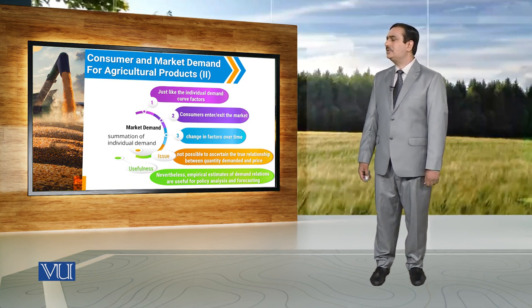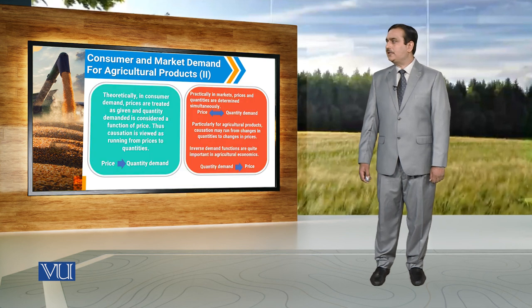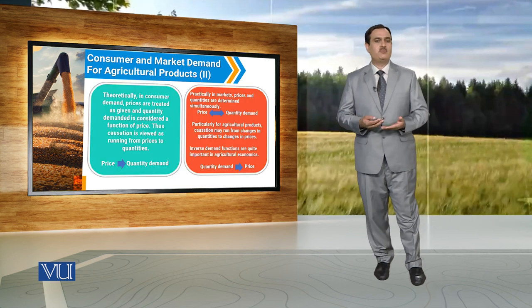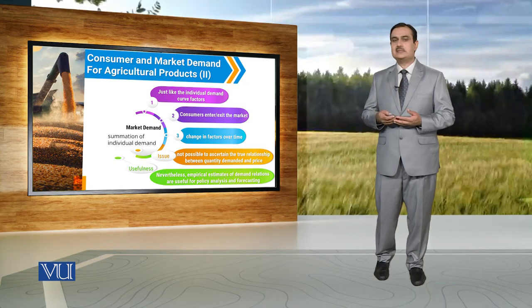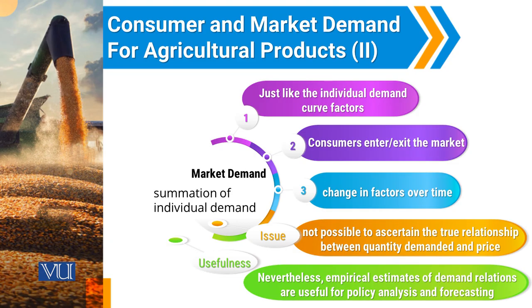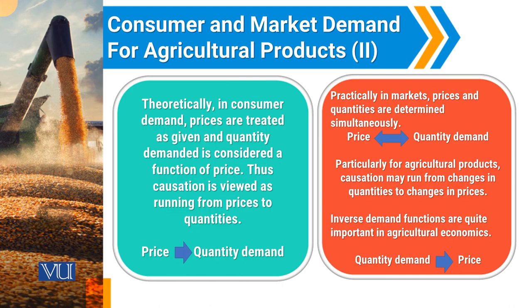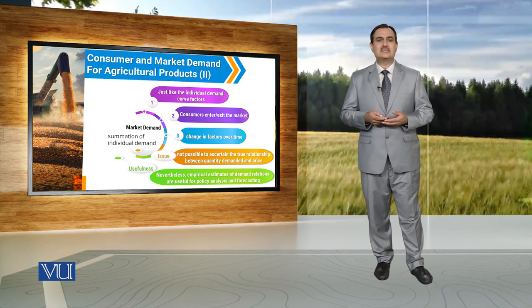It is possible that market demand changes because of changes in factors over time. The issue we face when discussing market demand is that it is not possible to describe a true association between quantity demanded and price, because there are many factors that change in the market. But even though we are not very sure about the exact market demand, it is useful to estimate the relationship between quantity demanded and price for policy making, forecasting, and analysis.